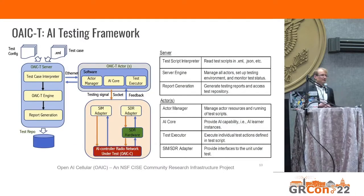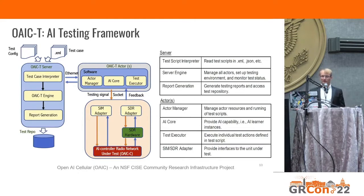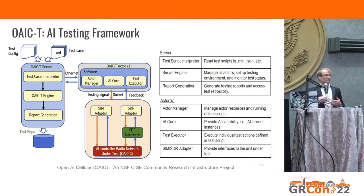Another part of the project is a testing framework we call OICT, also based on AI. If you have intelligent RANs where AI controls scheduling, user admission, traffic steering, and handover, these next generation networks need to be tested properly against all sorts of signals. We have a framework for generating test scripts and test signals. If you develop a new X-app, you can run our AI testing framework to verify it works in different conditions. We also want to apply AI to the testing itself, to learn what signals to generate to test network performance.